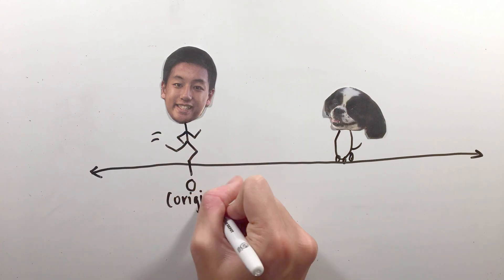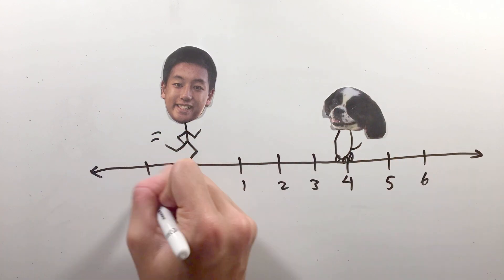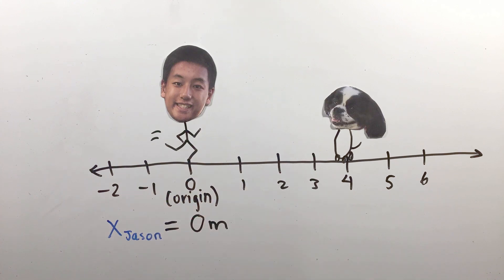In one-dimensional motion, think of it kind of like a number line. You can choose anywhere in the world to be position zero, and from there, the position of each object in the world is based off that origin point.